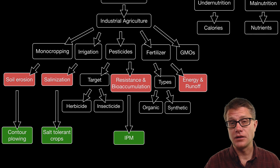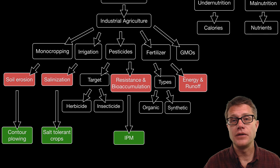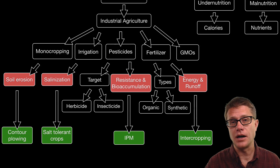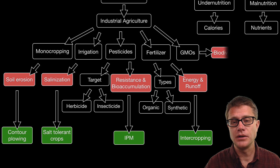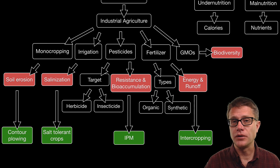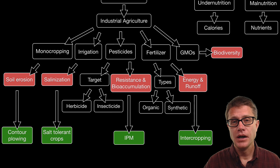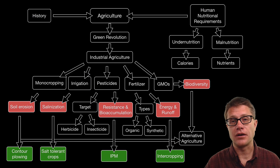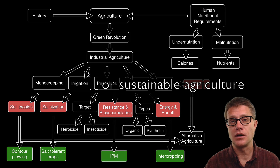Fertilizers require a lot of energy — they require fossil fuels to make. They will also run off the fields and enter into the food web, causing things like eutrophication. We can use other crops as fertilizers using something called intercropping. Genetically modified organisms — most studies are saying they are not harmful to humans to eat, but they can lead to a decrease in biodiversity. And so there is a big push away from industrial agriculture towards alternative agriculture. We still have to feed the humans on our planet, but we can do it in a smarter way.